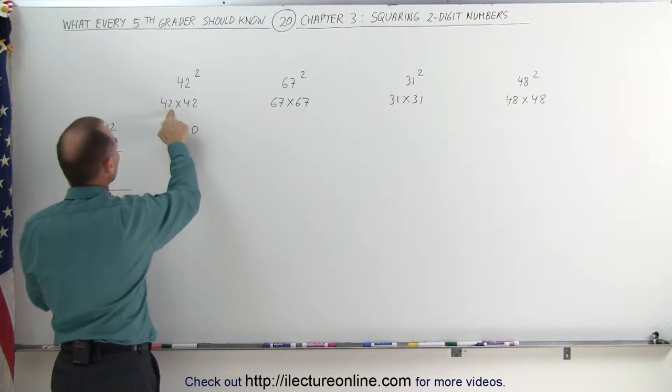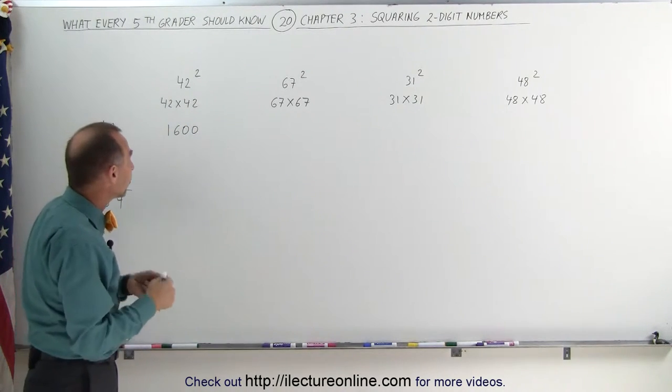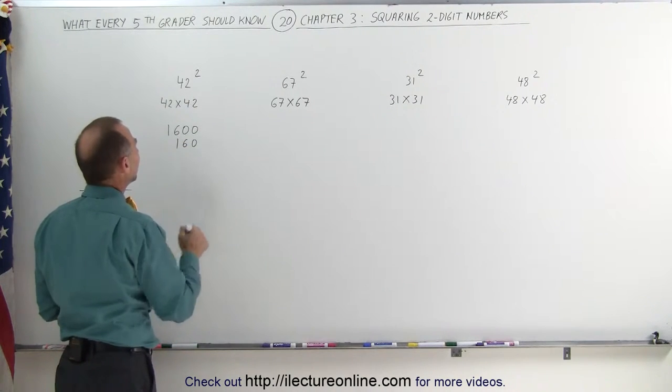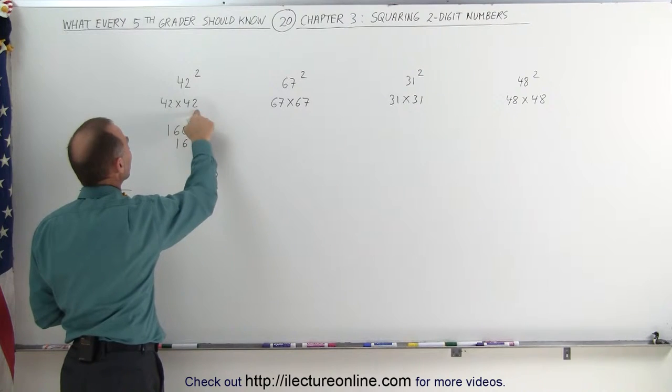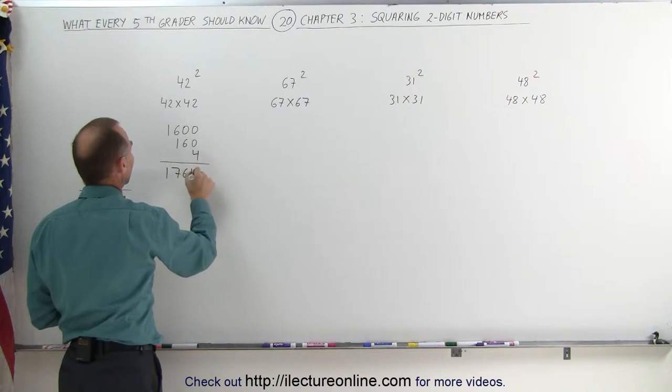Then you multiply the two numbers together, 2 times 4, and double that. 2 times 4 is 8. Double that is 16. Add a zero, you get 160. And then you multiply the last two numbers together, 2 times 4, which gives you a 4. Add it all together. That's 1,764.